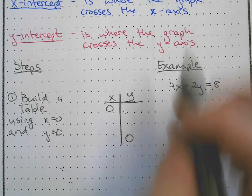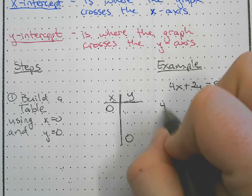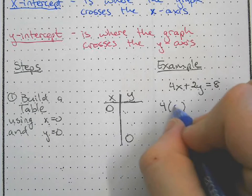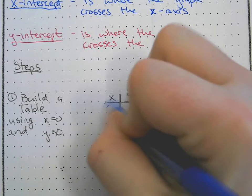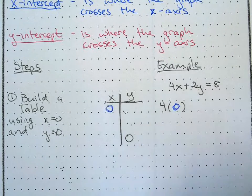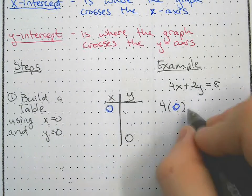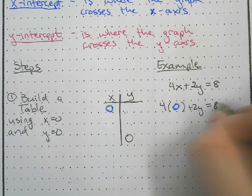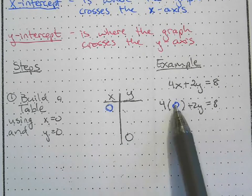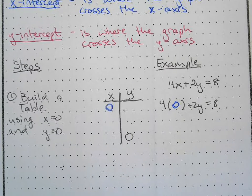We're going to find the y value when x equals 0. So 4 times 0 plus 2y equals 8. I just plugged in x equals 0, and now we're going to simplify and solve for y.